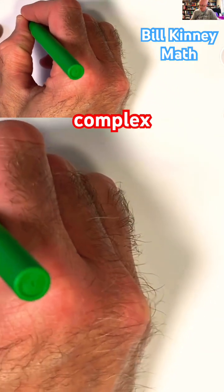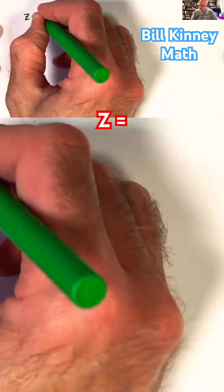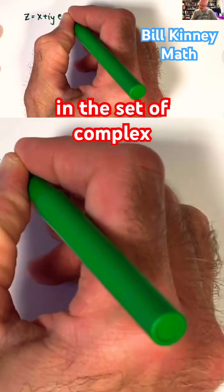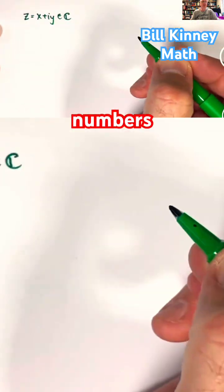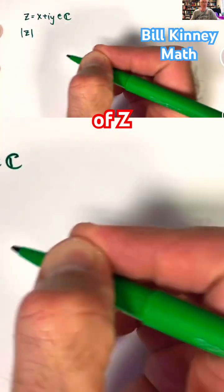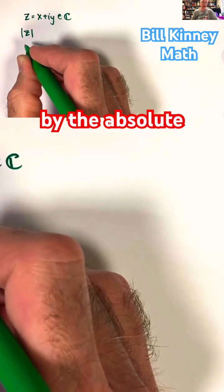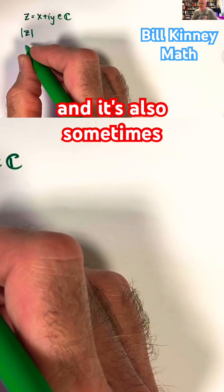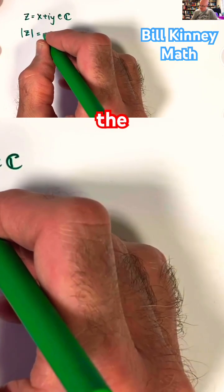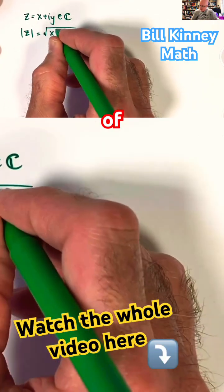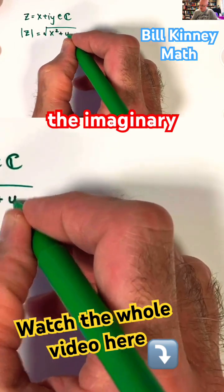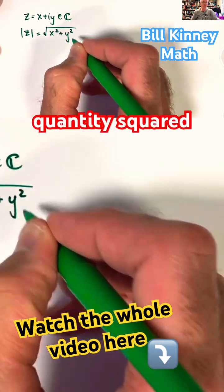First of all, given a complex number z equals x plus iy in the set of complex numbers C, we can define the modulus of z, denoted by the absolute value symbols — also sometimes called the absolute value of z — as the square root of the real part x quantity squared plus the imaginary part y quantity squared.